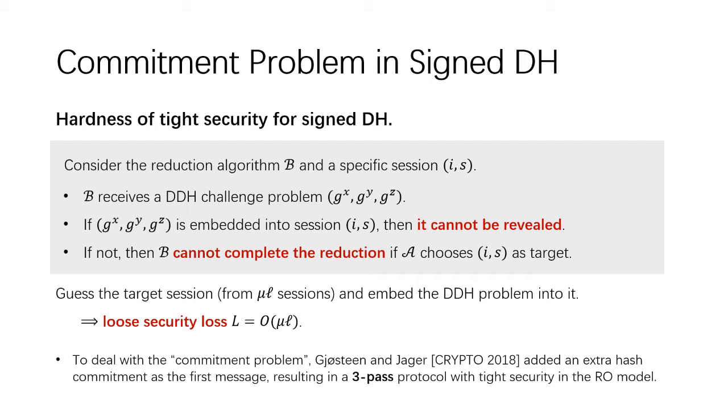To deal with the commitment problem, Gjøsteen and Jager added an extra hash commitment as the first message, resulting in a three-pass protocol with tight security in the random oracle model.